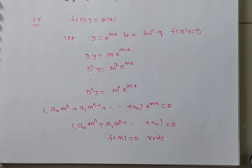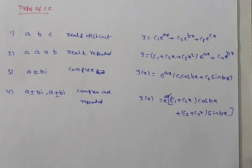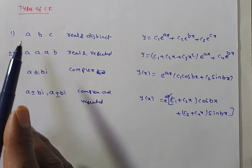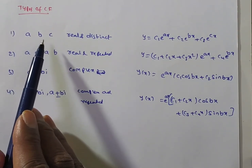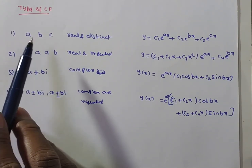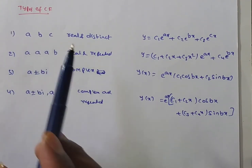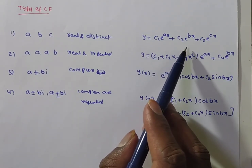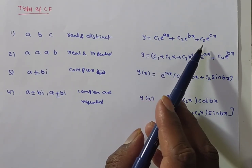The roots of f(m) = 0 may be real or complex. If the roots are real and distinct — say a, b, c — then the complementary function is CF = c₁eᵃˣ + c₂eᵇˣ + c₃eᶜˣ.